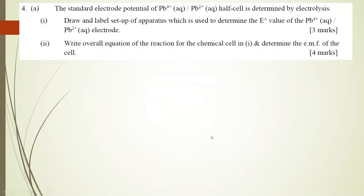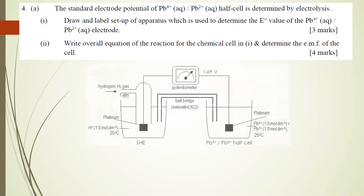Essay question number four (a) sounds like this: the electrode potential of the Pb4+/Pb2+ half cell is determined by electrolysis. Number one — draw and label the setup of apparatus used to determine the E° value of the Pb4+/Pb2+ electrode and write the overall equation for the reaction for the chemical cell. Number two — determine the EMF of the chemical cell.